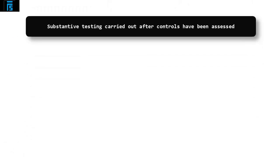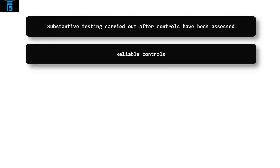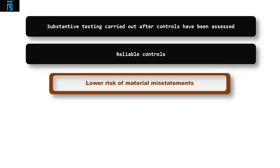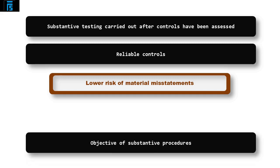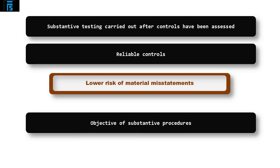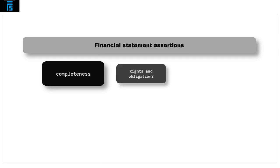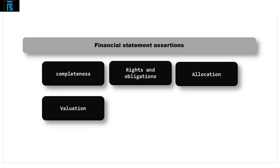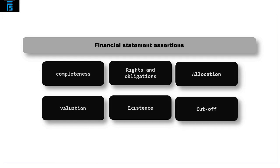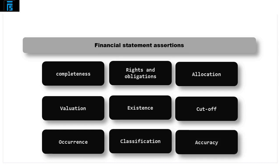Substantive procedures are carried out mainly after the controls have been assessed. The level of substantive testing depends on how reliable the control systems are — the more reliable the controls, the less likely there will be material misstatements. The objective of substantive procedures is broken down into the financial statement assertions: completeness, rights and obligations, allocation and valuation, existence, cutoff, occurrence, classification and accuracy.